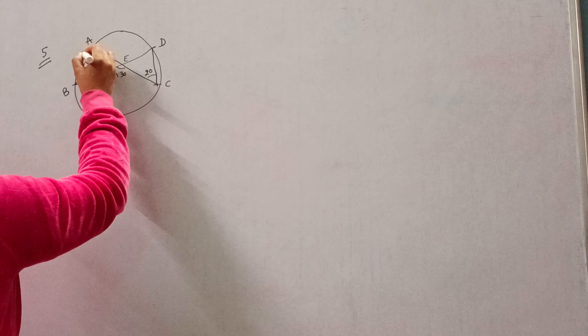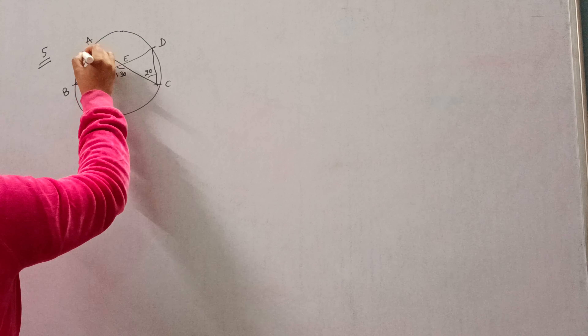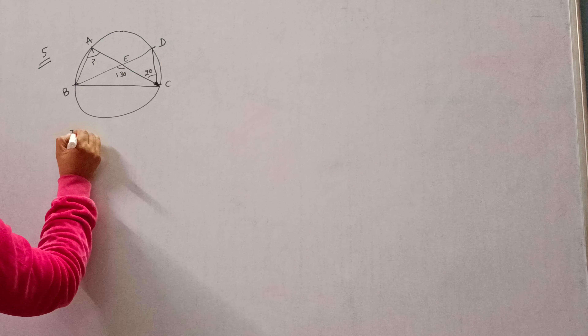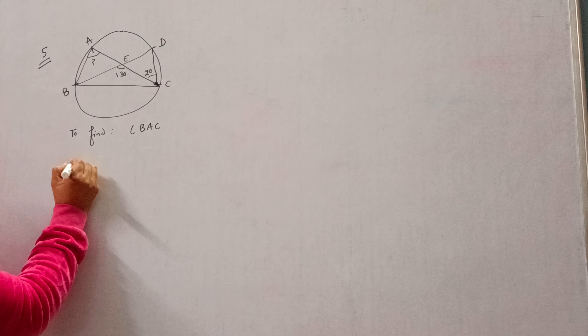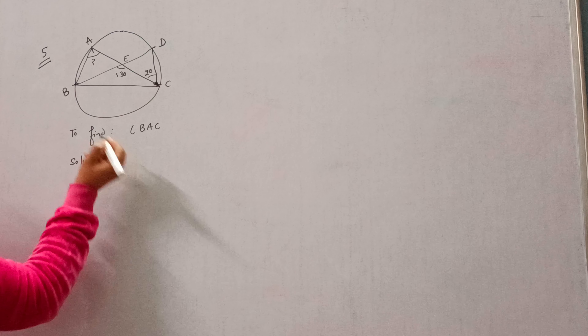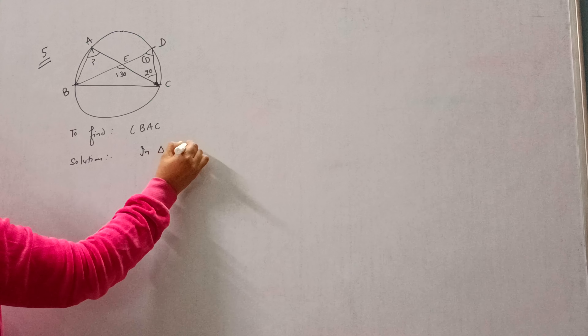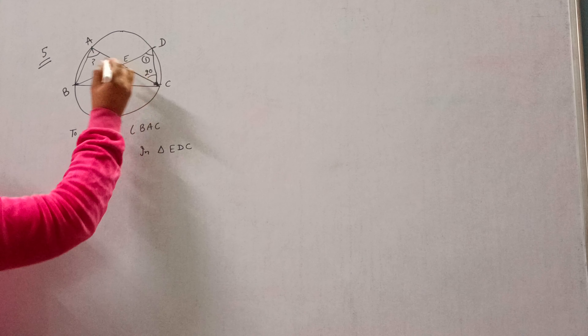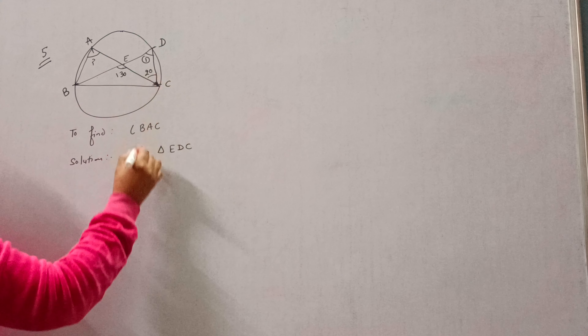Question number 5 is: In figure 10.39, A, B, C, D are 4 points on a circle. AC and BD intersect at point E, such that angle BEC is 130 degrees and angle ECD is 20 degrees. Find angle BAC — this is the angle we need to find.